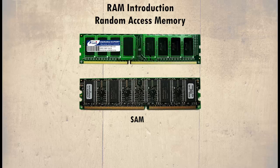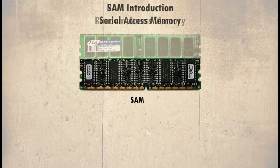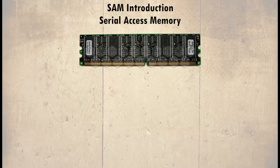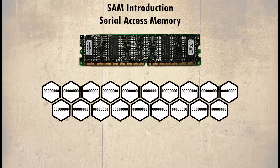Physically there does not seem to be much difference between RAM and SAM memory, but they behave completely differently. If we abstract the memory cells, we would have something like this — in each cell lies a piece of data in binary format. In this example, all the cells are blank.